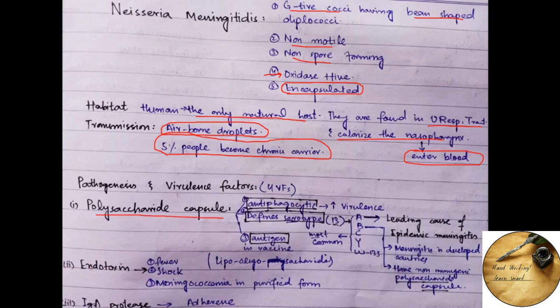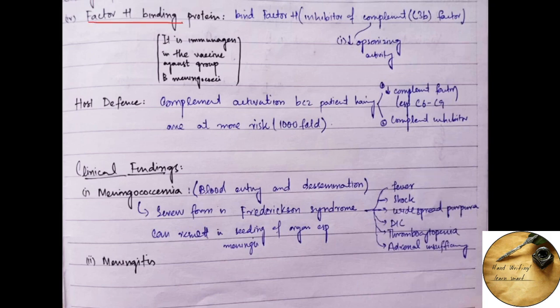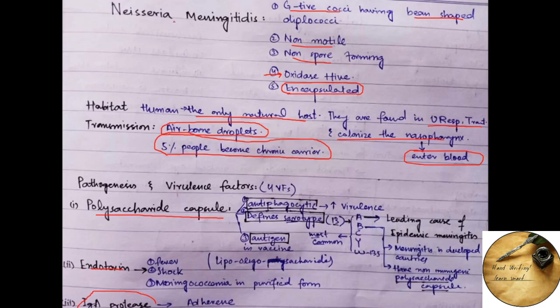So, coming towards the virulence factors and the enzymes and toxins they produce: number one is the polysaccharide capsule, second one is the endotoxin, third one is the IgA protease, and the fourth one is the Factor H binding protein.